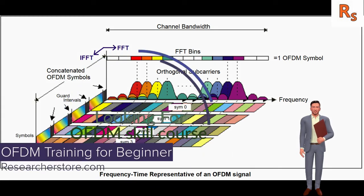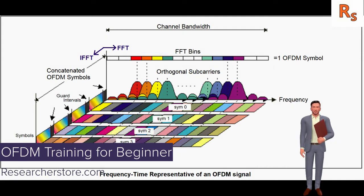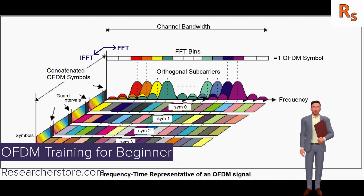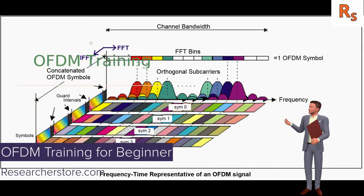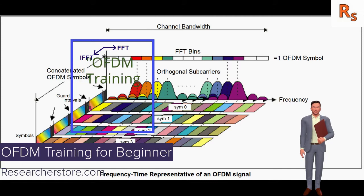In the recent past, high data rate wireless communications are often considered synonymous with an orthogonal frequency division multiplexing system. OFDM is a special case of multi-carrier communication as opposed to a conventional single carrier system. The concepts on which orthogonal frequency division multiplexing is based are so simple that almost everyone in the wireless community is a technical expert in this subject.